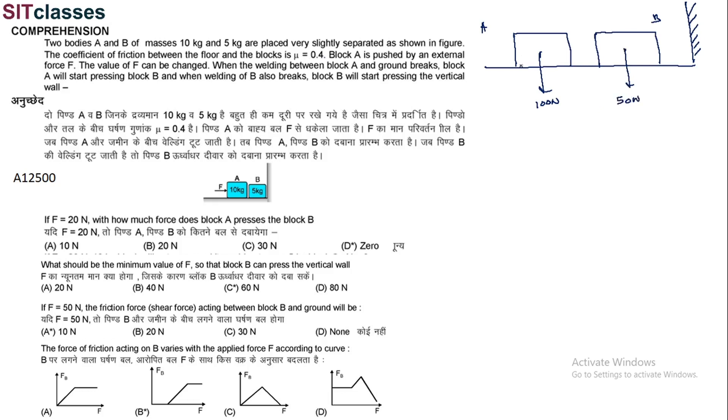Coefficient of friction is 0.4. So basically, limiting friction for block A is equal to 40 N, and limiting friction for block B will be equal to 20 N.